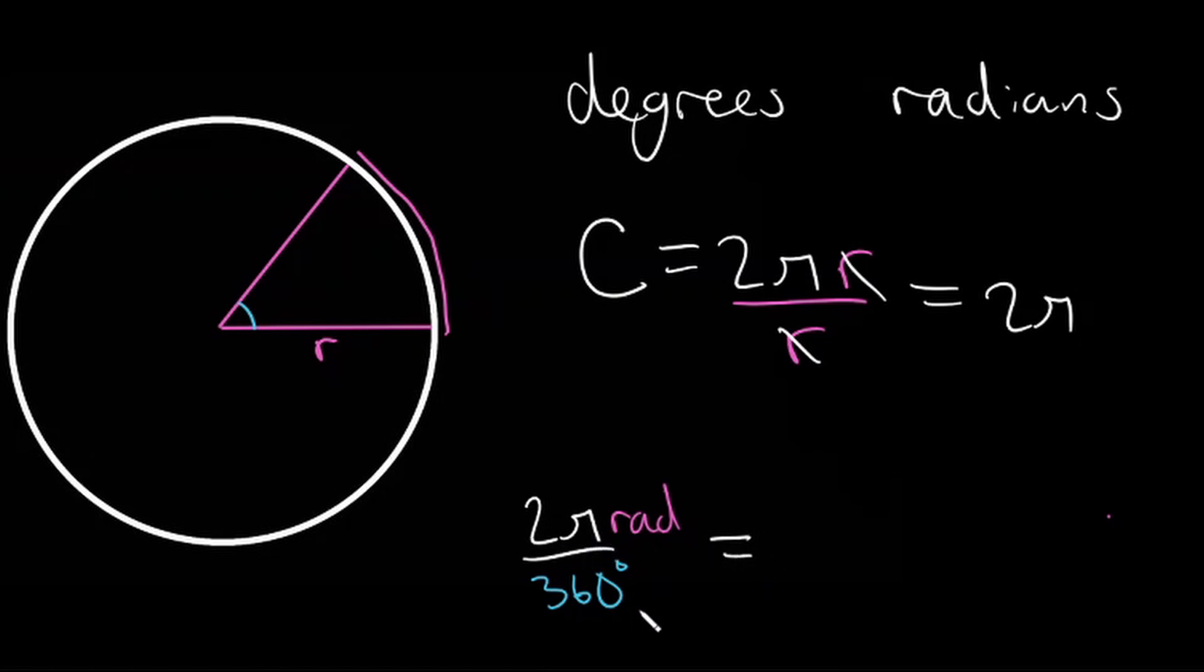So if we just divide the top and bottom of this fraction by 2, we will get pi radians is equal to 180 degrees. So pi radians is equal to 180 degrees.